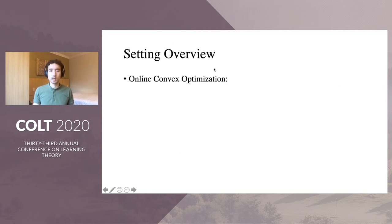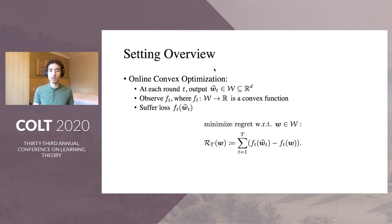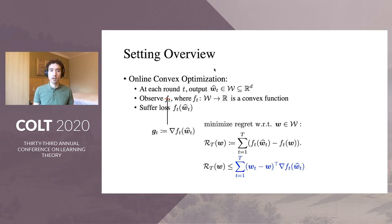A quick overview of the setting. In OCO, at each round T, the learner or the algorithm outputs a vector w in some convex bounded or unbounded set. Then the environment reveals a convex loss function f, and the learner suffers a loss f at the output w. The goal is to minimize the regret with respect to any comparator vector w, where the regret is the difference between the sum of the losses of the learner minus the sum of the losses at the comparator vector w. Since the losses are convex, the regret can be bounded from above in terms of the gradients at the output, and the term highlighted in blue is known as the linearized regret. It is standard to upper bound the linearized regret.